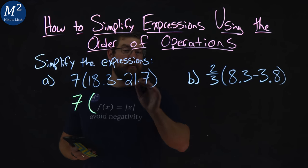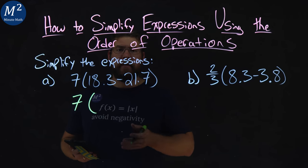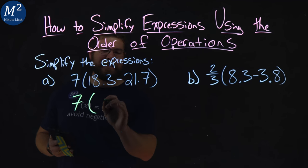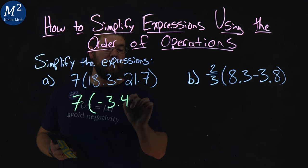And if you need practice with subtracting decimals, we have other videos on that previously. From there, 18.3 minus 21.7 is negative 3.4.